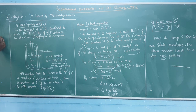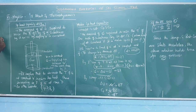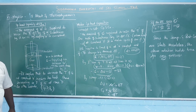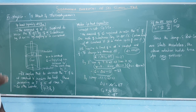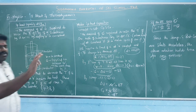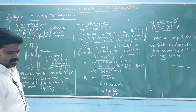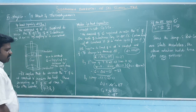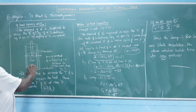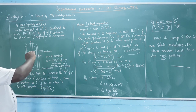Last class, we talked about specific heat capacity of gases. We talked about two types — one at constant pressure and one at constant volume.